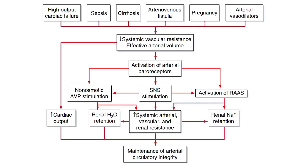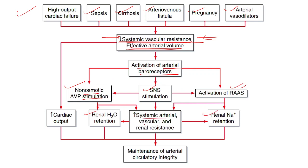In high-output states — due to causes such as high-output cardiac failure, sepsis, cirrhosis, AV fistula, pregnancy, or use of vasodilators — there is decreased systemic vascular resistance and decreased effective arterial volume. This leads to activation of arterial baroreceptors, followed by non-osmotic AVP stimulation, sympathetic nervous stimulation, and activation of the RAS system, ultimately producing water retention, sodium retention, and increased vascular resistance to maintain arterial circulatory integrity.